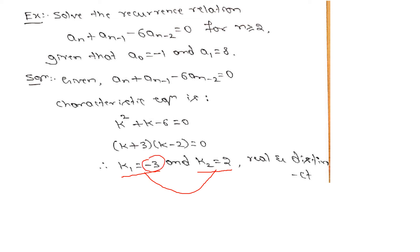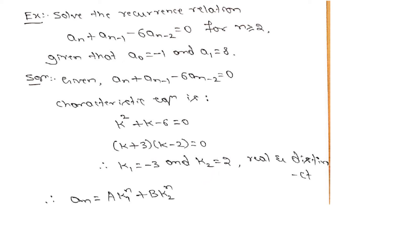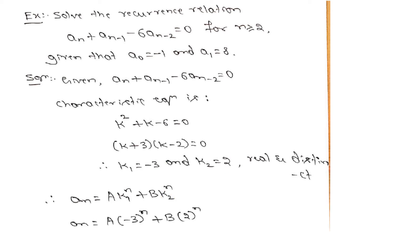Since the roots are real and distinct, the solution An is given by An equals A·K1 to the power n plus B·K2 to the power n. Here K1 is the first root, which is minus 3, and K2 is the second root, which is 2. Substituting, we write minus 3 in place of K1 and 2 in place of K2, giving An equals A·(minus 3) to the power n plus B·2 to the power n.